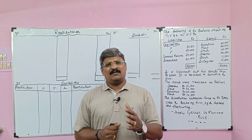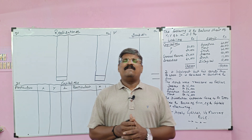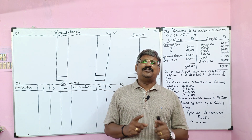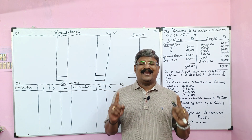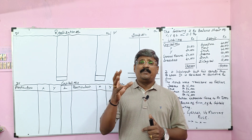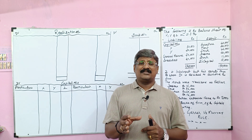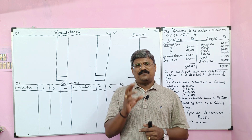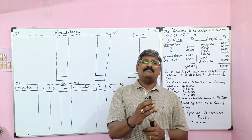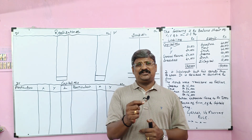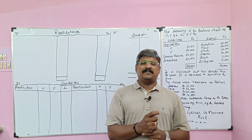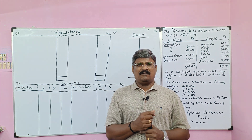The other partner is called a solvent partner. As per Garner vs. Murray, we should remember three points. First, we should find the realization loss — it should be transferred to all the partners in the old profit sharing ratio. Second, the solvent partner should bring the realization loss by cash. Third, we should find the deficiency of the insolvent partner; the deficiency should be shared by solvent partners in capital ratio just before dissolution.